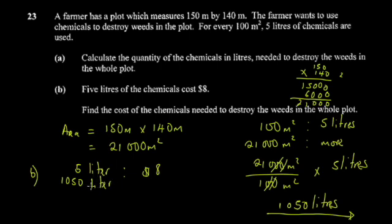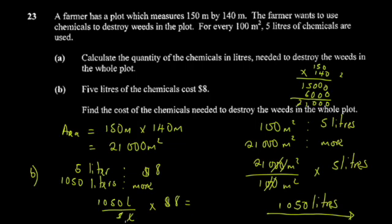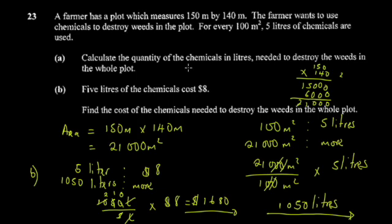The cost will obviously be more because money and quantity are directly proportional. So: (1,050 ÷ 5) × 8 = 210 × 8 = 1,680. So $1,680 is the amount required to destroy all the weeds for the whole plot.